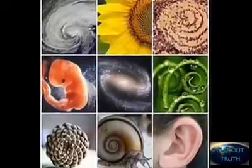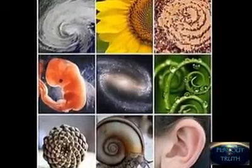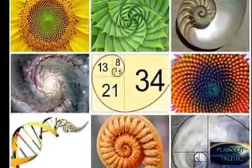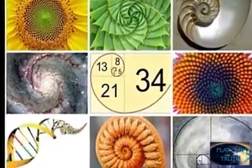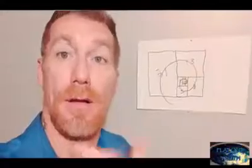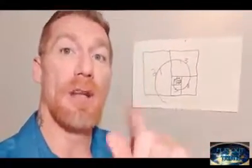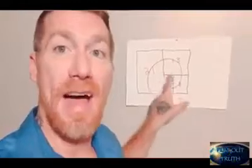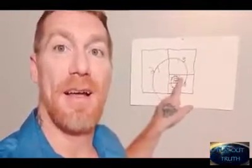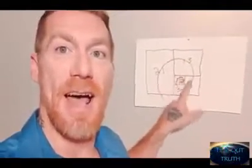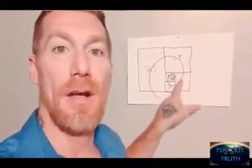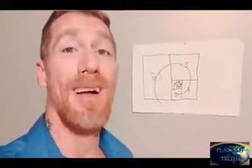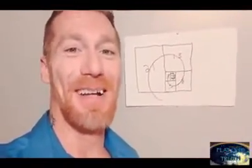Everything on earth has this same mathematical design, all the way down to our own DNA. It would kill evolution theory and it would kill the big bang theory — that's why this is not allowed to be taught in public schools. It's time to wake up. Thanks for watching and God bless.